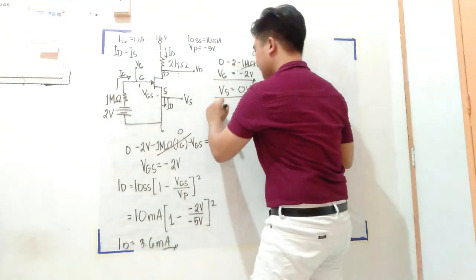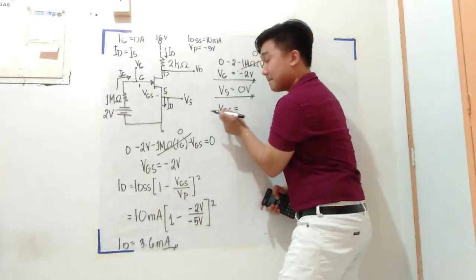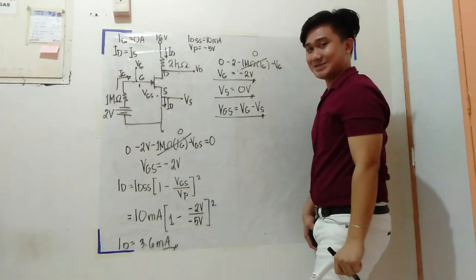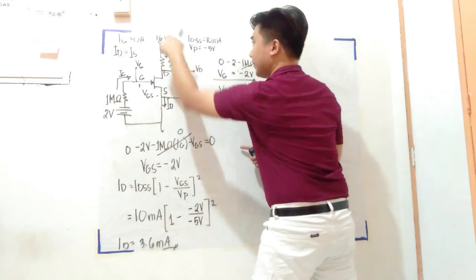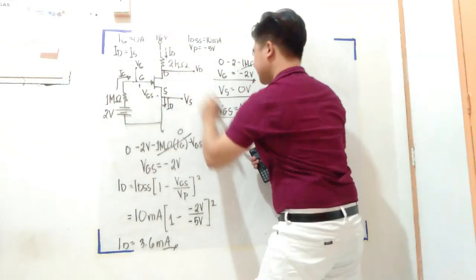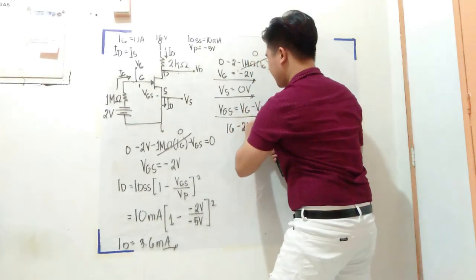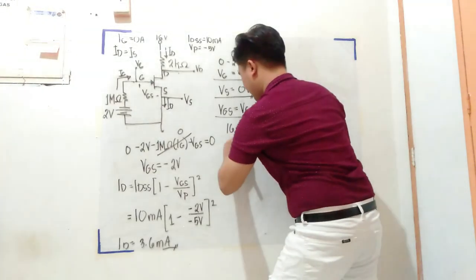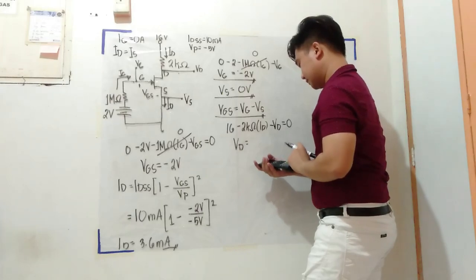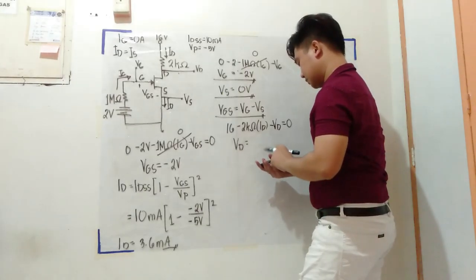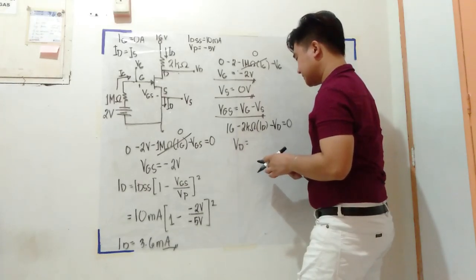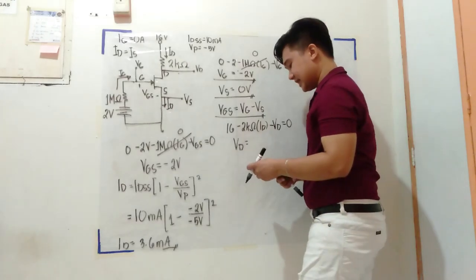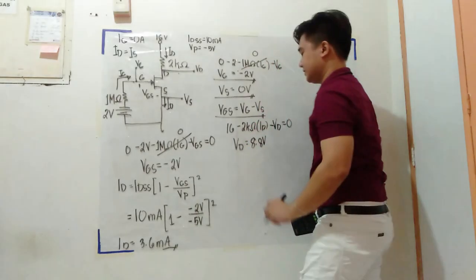Also the same thing: VGS equals VG minus VS. Don't forget that relationship. So for VD, I can do KVL from here up to there. So 16 minus 2 kilo ohms times the value of ID minus VD equals 0. So VD equals 16 minus 2 kilo ohms times the value of ID which is 3.6 milliamps. Store this in the calculator to avoid rounding errors. This equals 8.8 volts.